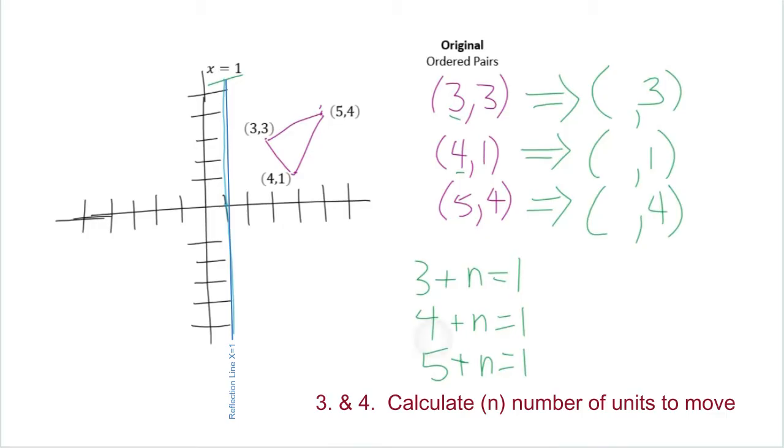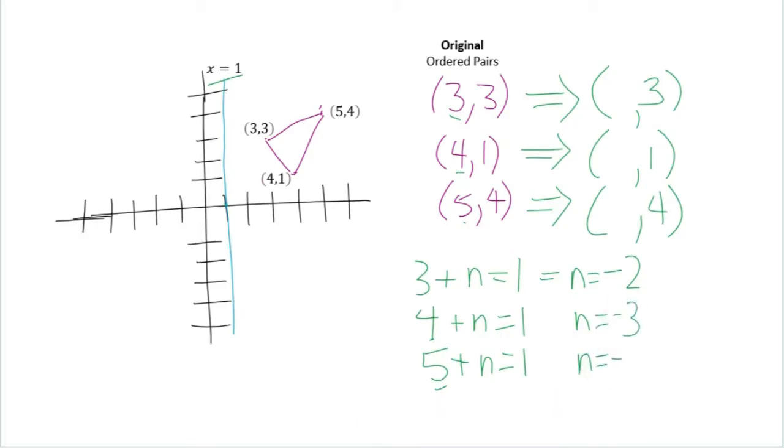So this 4 is relative to that 4, and that 5 is relative to this 5. So we know that here n equals negative 2, here n equals negative 3, and here n equals negative 4.